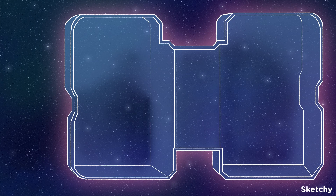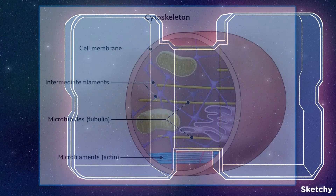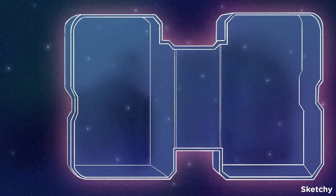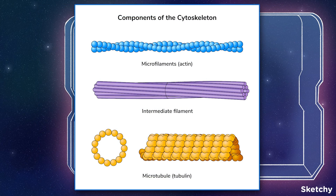The cytoskeleton is a collection of protein bundles found in every eukaryotic cell that protects the cell, transports cellular materials, and assists with cell division. The cytoskeleton is comprised of three major components: microfilaments, intermediate filaments, and microtubules. We'll be reviewing each of these in more detail, so let's start small with the microfilaments.